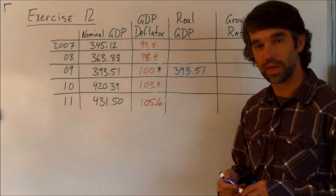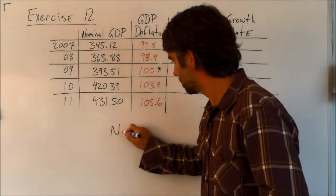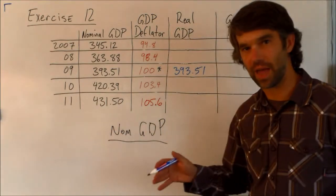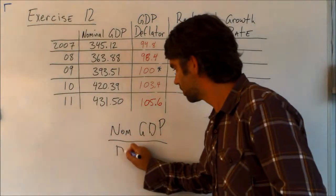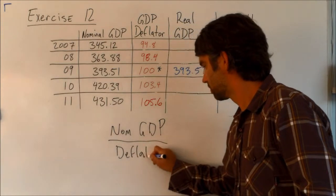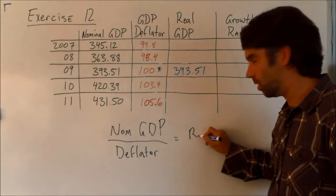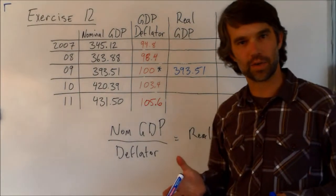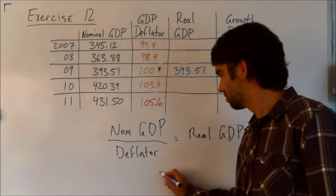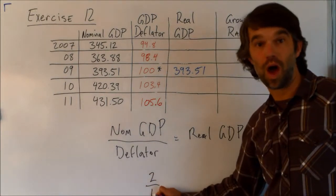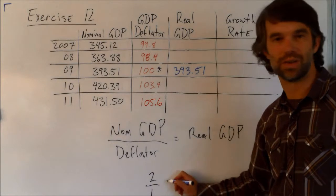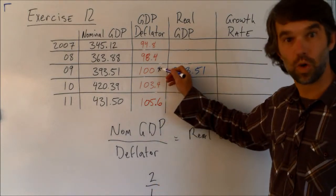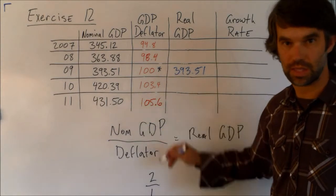When we do this, we're going to take the nominal GDP and divide it by the deflator, and that's going to equal real GDP. So I can predict if I take any number, call it two, and I divide it by one. Well, what happens to two? Nothing, it stays the same. That's the same as what we have here with 100. One is 100 in this system.